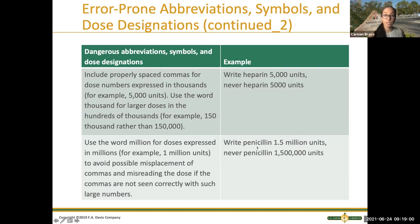You will see on labels that penicillin, for example — if it's more than one million, you write it out instead of adding a whole bunch of zeros, because this can easily be mistaken as well. That covers the abbreviations.